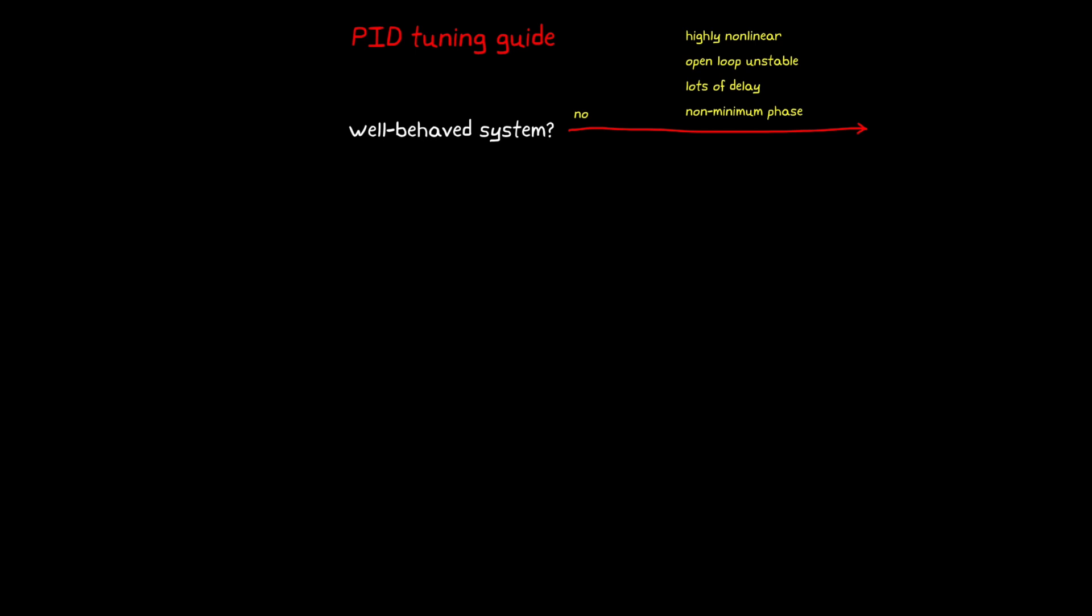In each of these cases, typical PID tuning approaches may work, but it's likely the system requires more advanced tuning methods or control architectures. For the remainder of this flowchart, we're going to focus on well-behaved systems. These are systems that are stable, nearly linear, have minimum phase, and a manageable amount of delay.